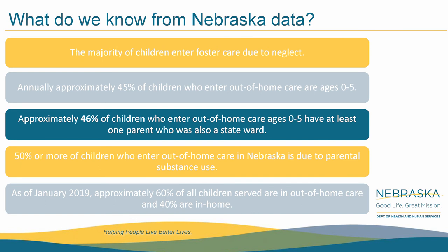What we found from Nebraska data in putting our plans together is that the majority of children enter our foster care system due to neglect. Parental substance abuse is a contributing factor for approximately 50% or more of children who enter out-of-home care. Of children between ages 0 and 5 who entered foster care in 2017, 47% were age 1 or younger. As of July 2018, 40% of all children involved in an ongoing services case had a parent who was also involved with CFS as a child themselves.